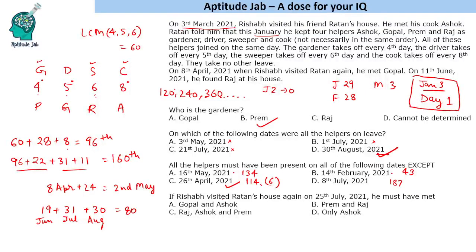If Rishab visited Ratan's house on 25th July 2021, whom would he meet? The 160th day was 11th June. From 11th June to 25th July is 19 days remaining in June plus 25 days in July = 44 more days. So 160 plus 44 equals the 204th day. 204 is divisible by 4 and by 6, but not by 5 or 8. So the gardener and sweeper are on leave, and Gopal (driver) and Ashok (cook) would be found at the house.